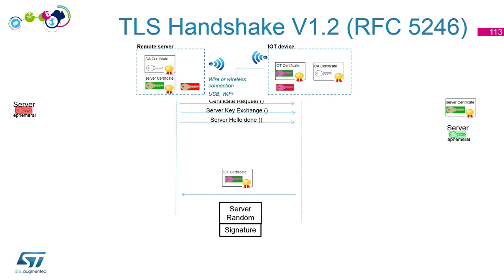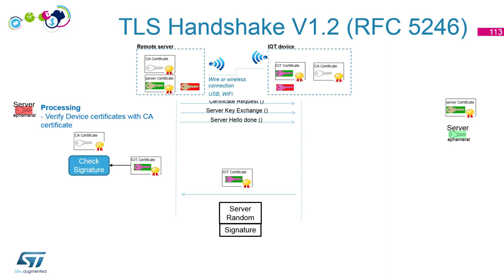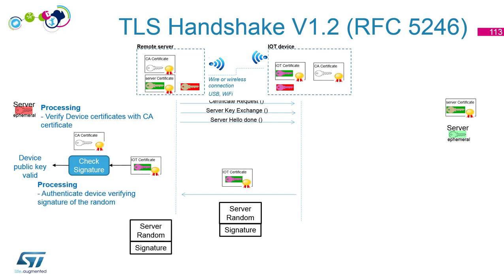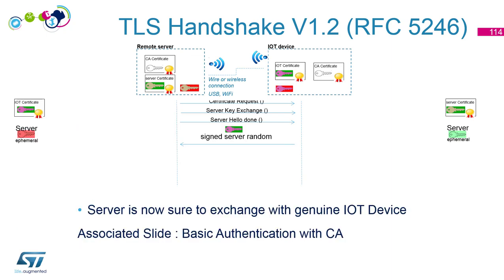On the server side, it first checks the IoT certificate using the CA certificate — confirming the device's public key is valid. Then it checks the signature using the IoT certificate. The device is now authenticated — the server is sure it is communicating with a real device. With that, the mutual authentication is complete.